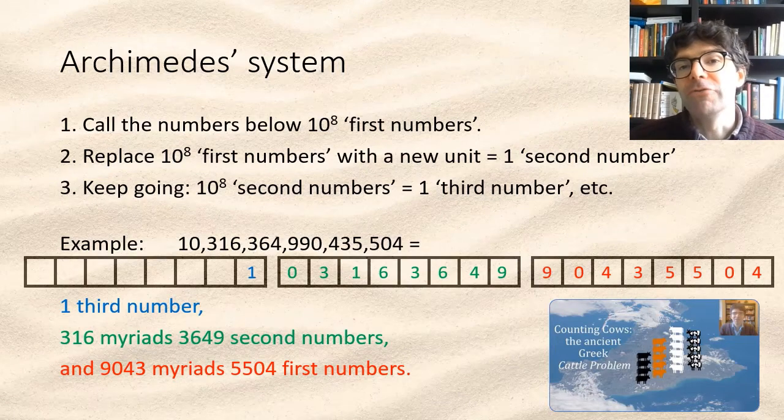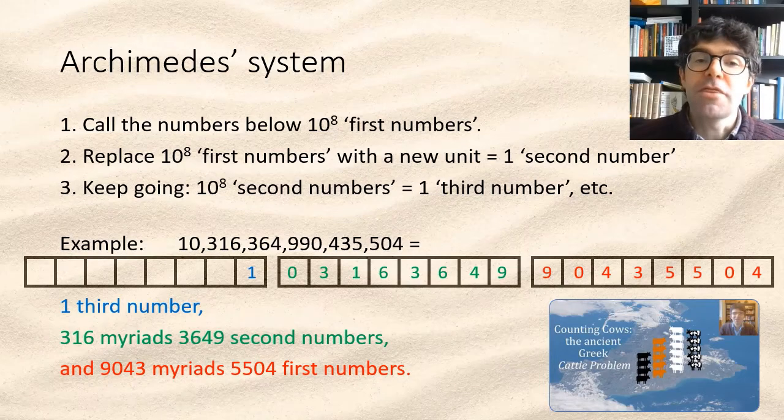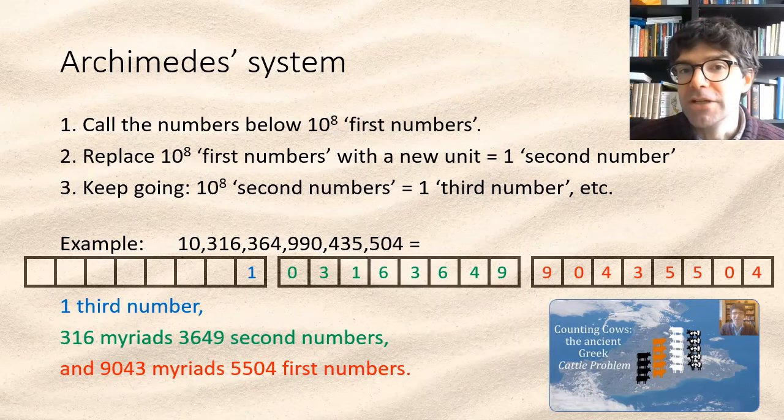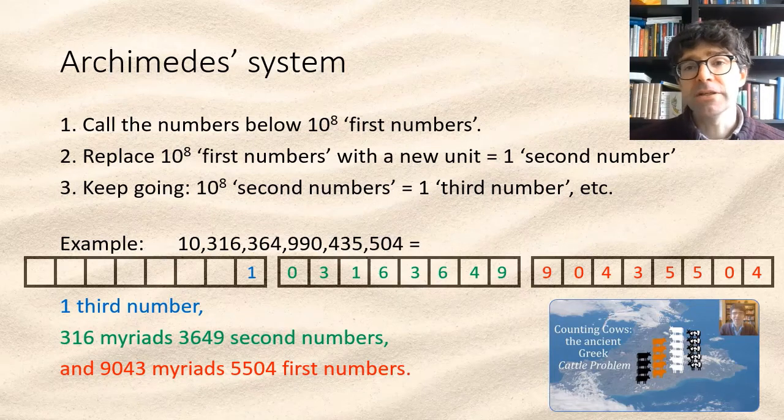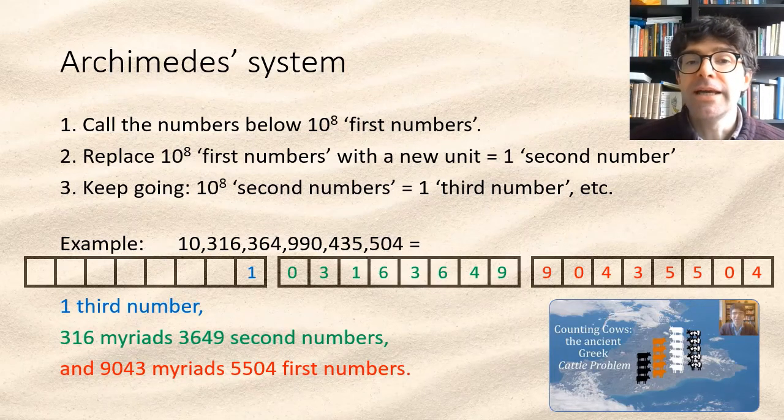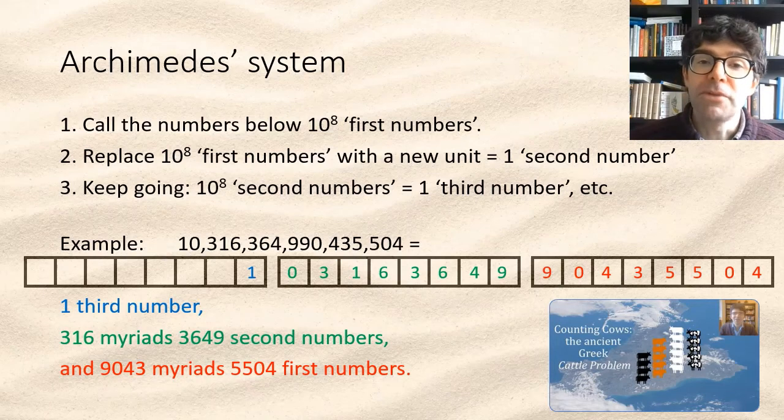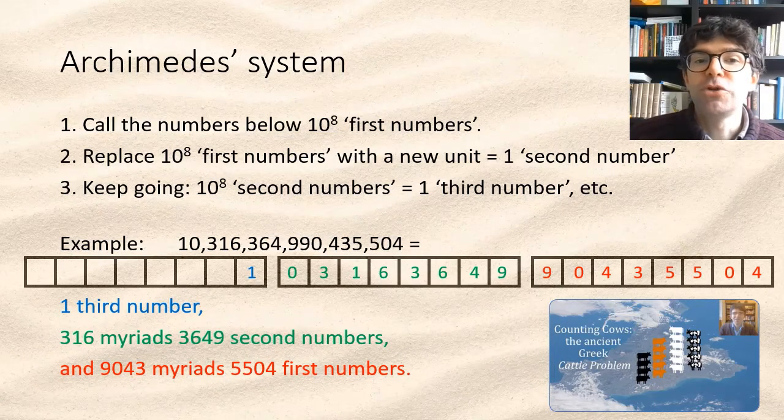So in general in this system, an nth number is going to translate into 10 to the power of 8 times n minus 1. And the largest number we can describe so far is a myriad lots of a myriad of the numbers from the myriad lots of a myriad class, which would be 10 to the power of 800 million.